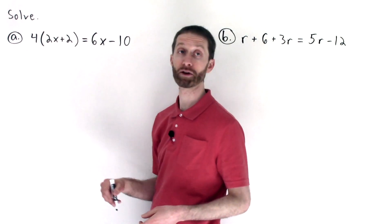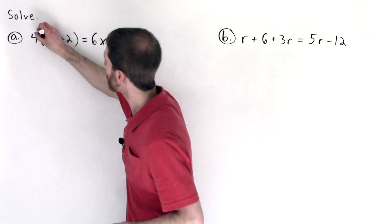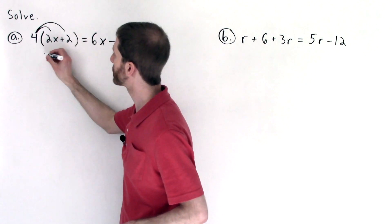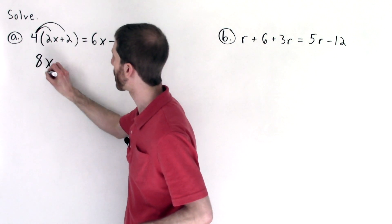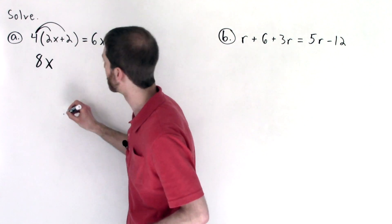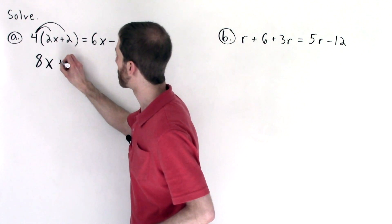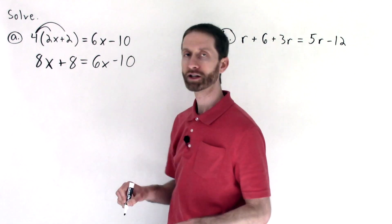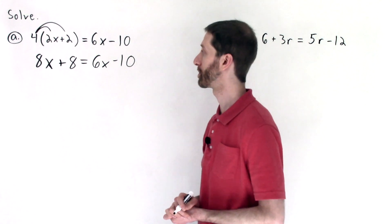We're going to multiply with the distributive property. So I will multiply 4 by each term. 4 times 2x is 8x. A little distributive property action. That's an x. Let's make that look more like an x. There we go. 4 times 2 is plus 8. Beautiful. And we copy the right hand side because there's no action to be taken on the right hand side. Nothing we can simplify.